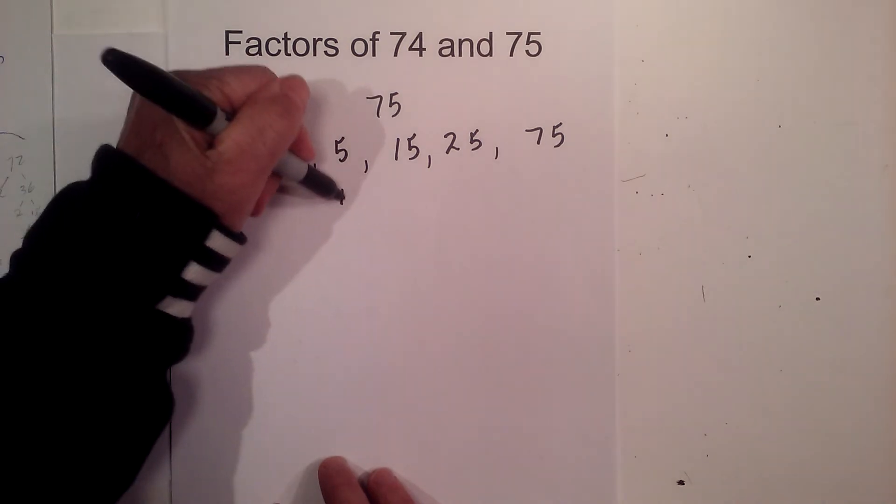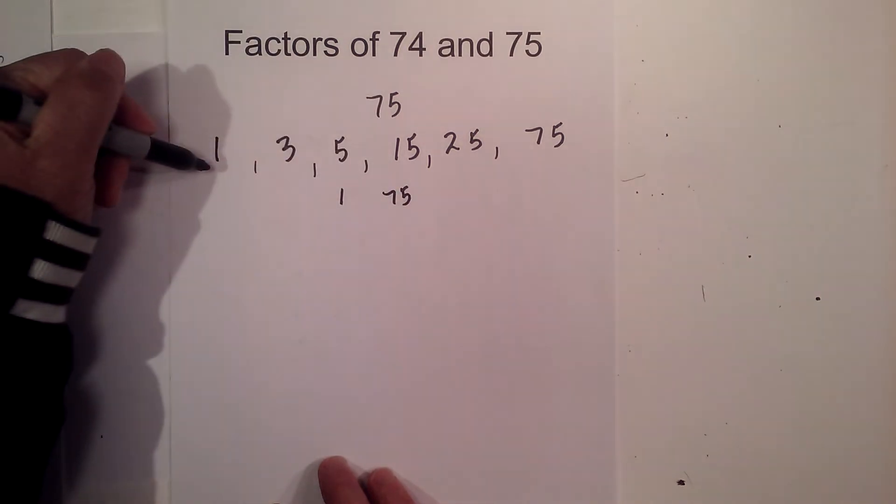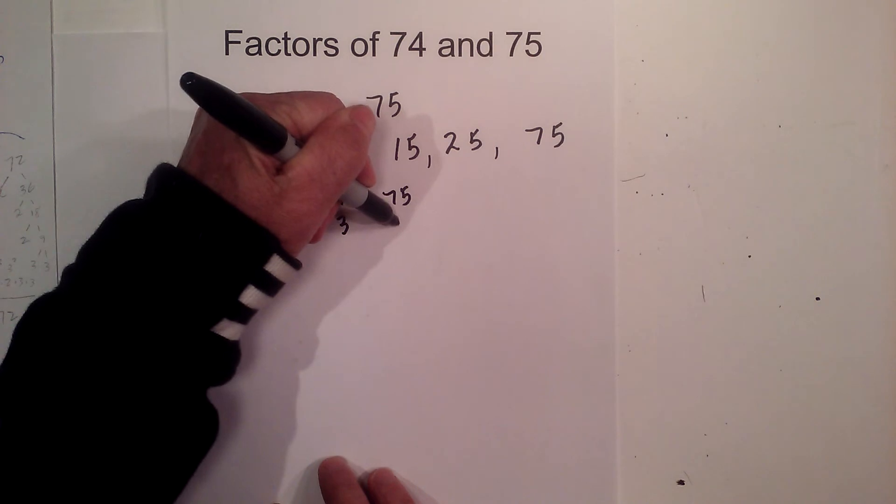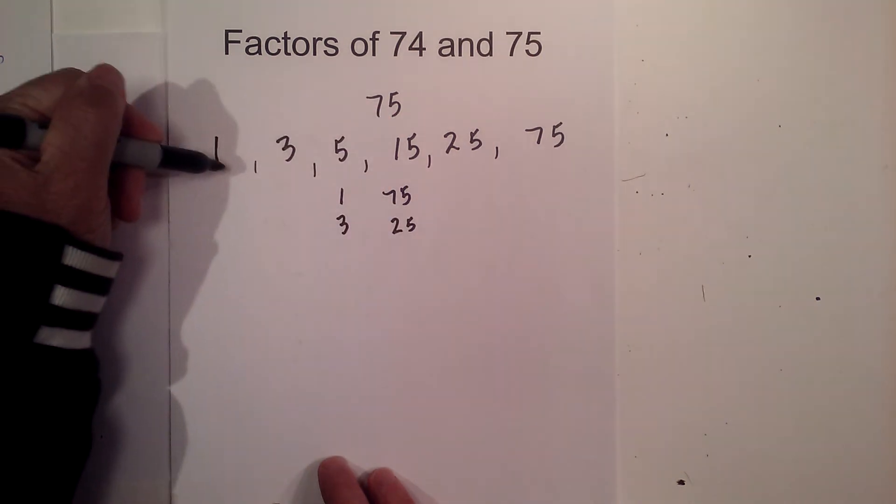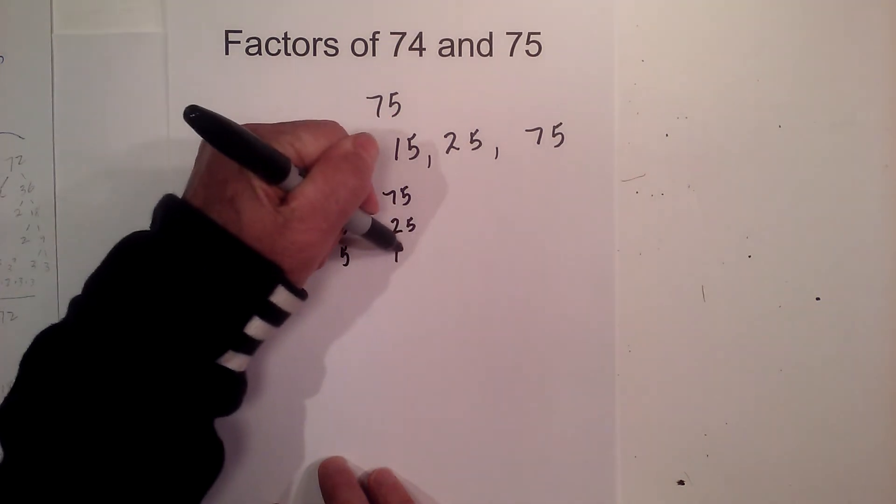And if you want pairs, you have 1 times 75, 3 times 25, and 5 times 15.